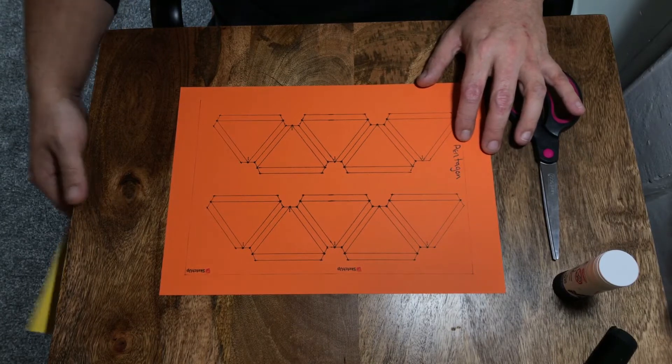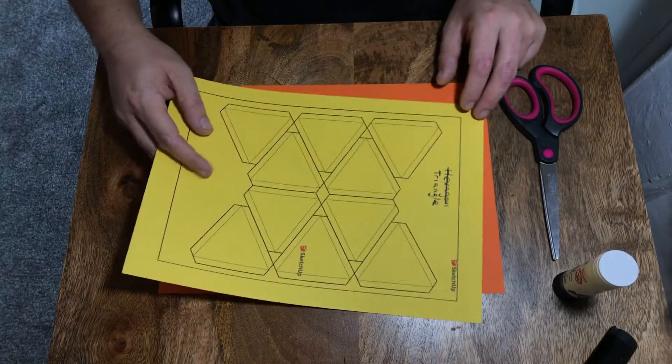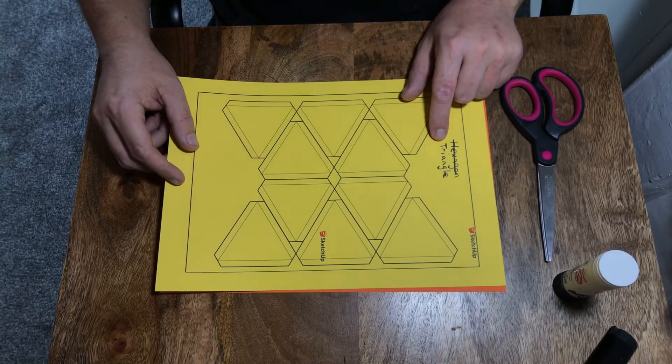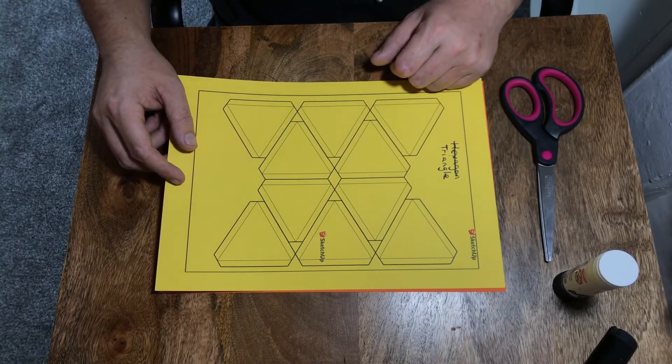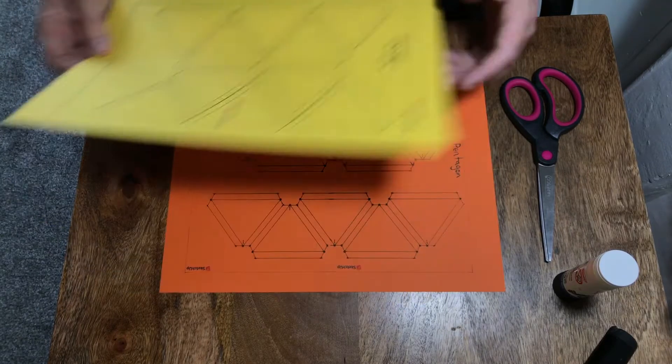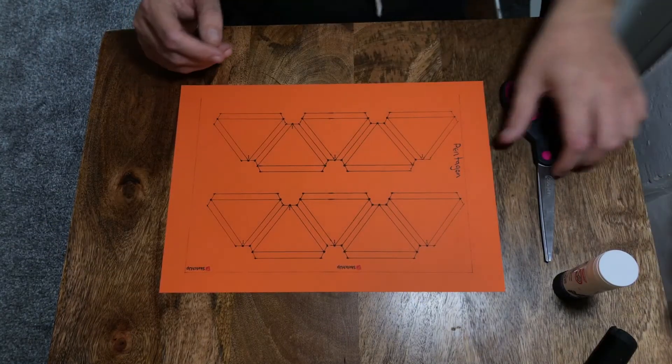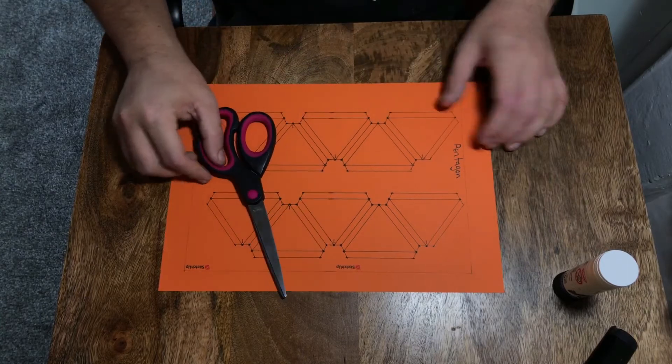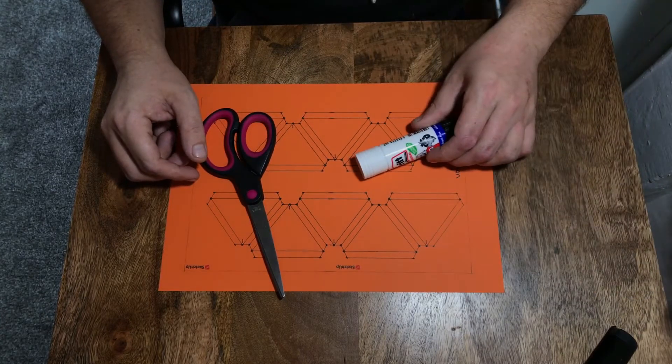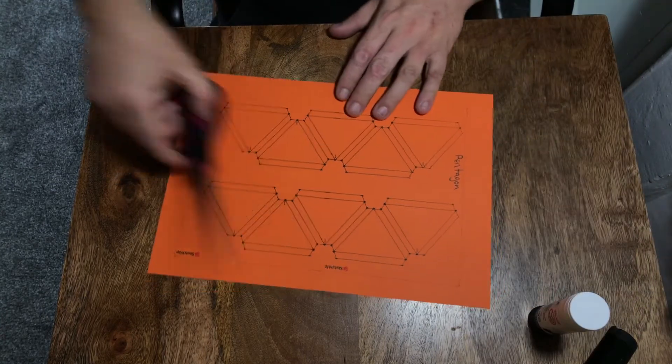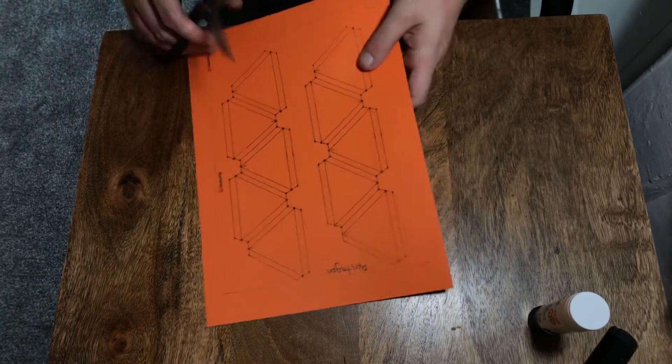You'll need one piece of card with triangles marked on it, and these will be available for download in the description. To start off with I'm just going to put these to the side. You'll also need a pair of scissors and a glue stick.